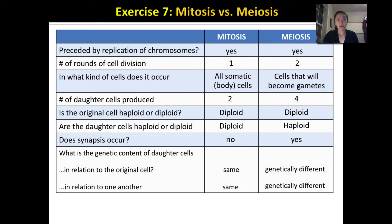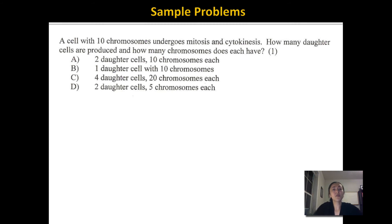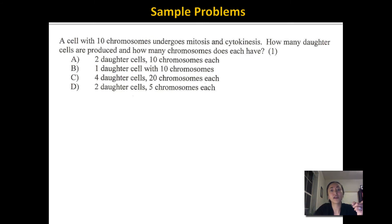Practice problem: A cell with 10 chromosomes undergoes mitosis and cytokinesis. How many daughter cells are produced and how many chromosomes does each have? We know mitosis creates cells identical to the original, so each daughter cell has 10 chromosomes, and mitosis creates two daughter cells. The answer is A.